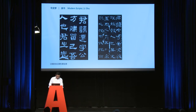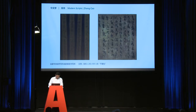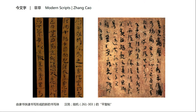This is the Li Shu — two styles of Li Shu in the Han dynasty. And this is Zhang Cao. Zhang Cao is the new cursive script developed from Li Shu. The left one is written on bamboo, the other one is written on paper. It's the earliest calligraphy of China.